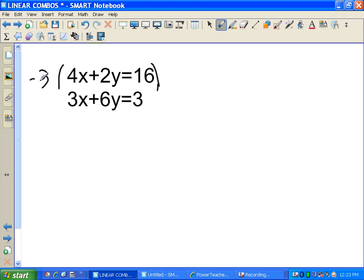So if I multiply by 3, well, that'll get me almost there. We want them to have the same value but we want 1 to be positive and 1 to be negative so that when we add them together, something drops out. So why don't we multiply by negative 3? If I do that, again, remembering to multiply everything by negative 3, I get negative 12x minus 6y equals negative 48. Bottom, I end up with the same equation I started because I did nothing to it. 3x plus 6y equals 3.